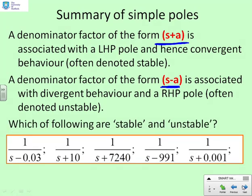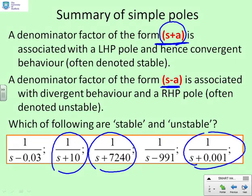A quick question — which of the following are stable and which are unstable? For the stable ones, we look for forms (s+a), giving poles in the left half plane. The stable cases all have (s plus ...) terms, giving convergent exponentials. The unstable ones have the minus signs. The magnitude of a or b is incidental — it has no impact on stability or convergence; what it changes is the speed at which convergence or divergence happens. The most important thing when distinguishing stability and instability is the sign.